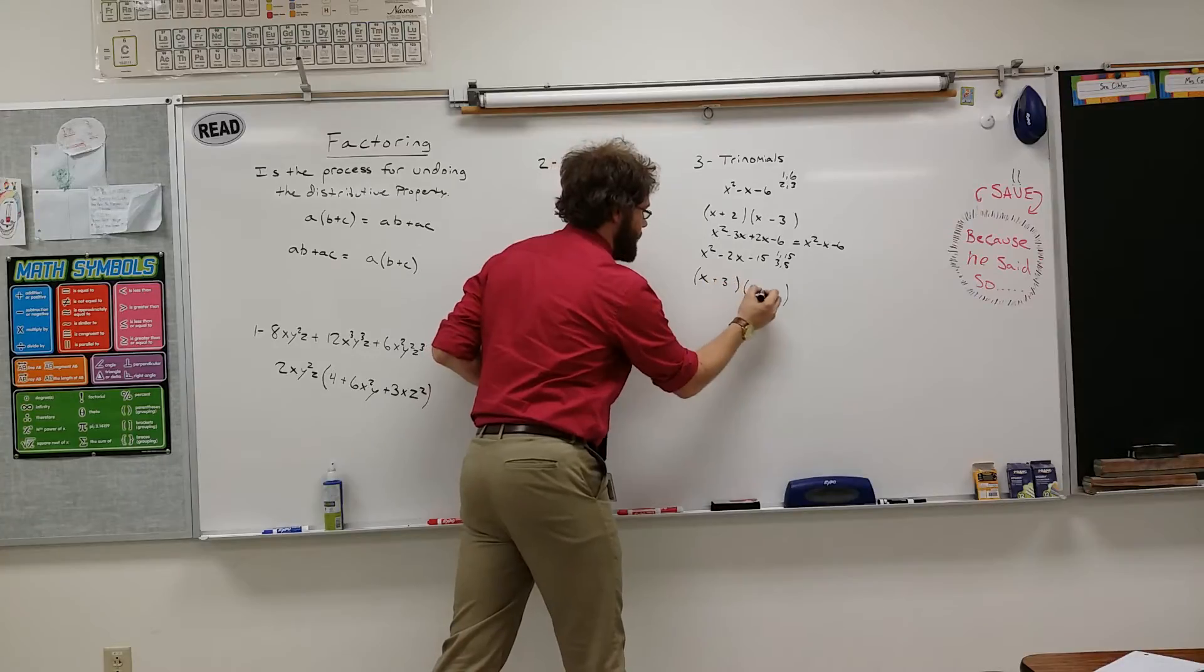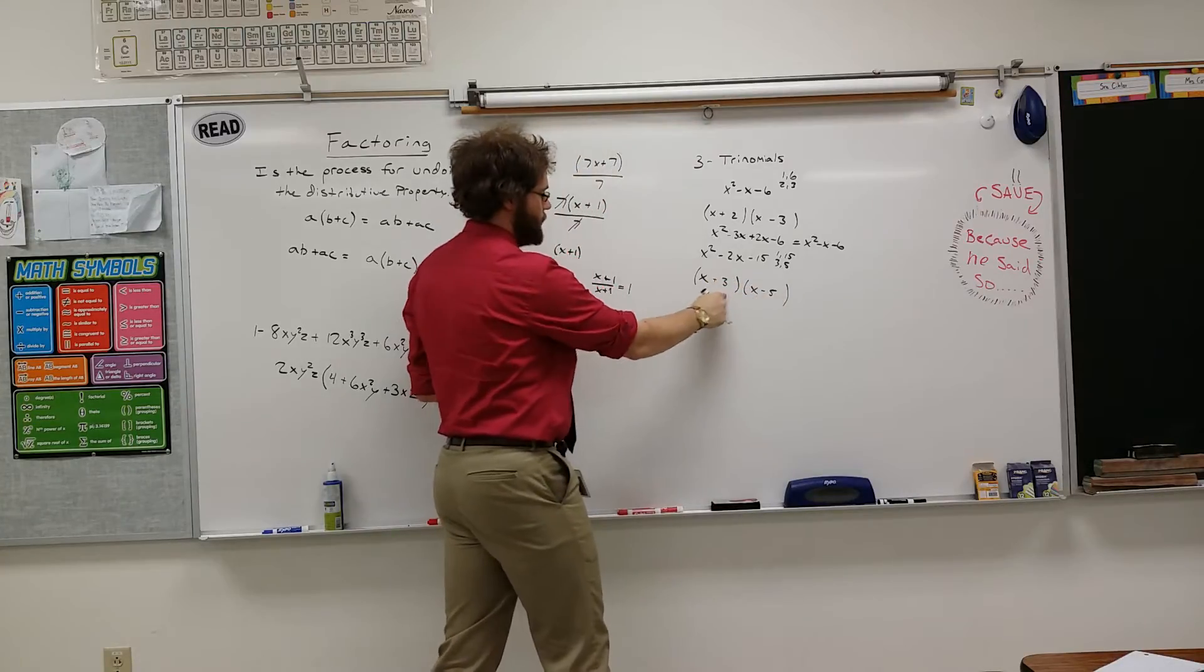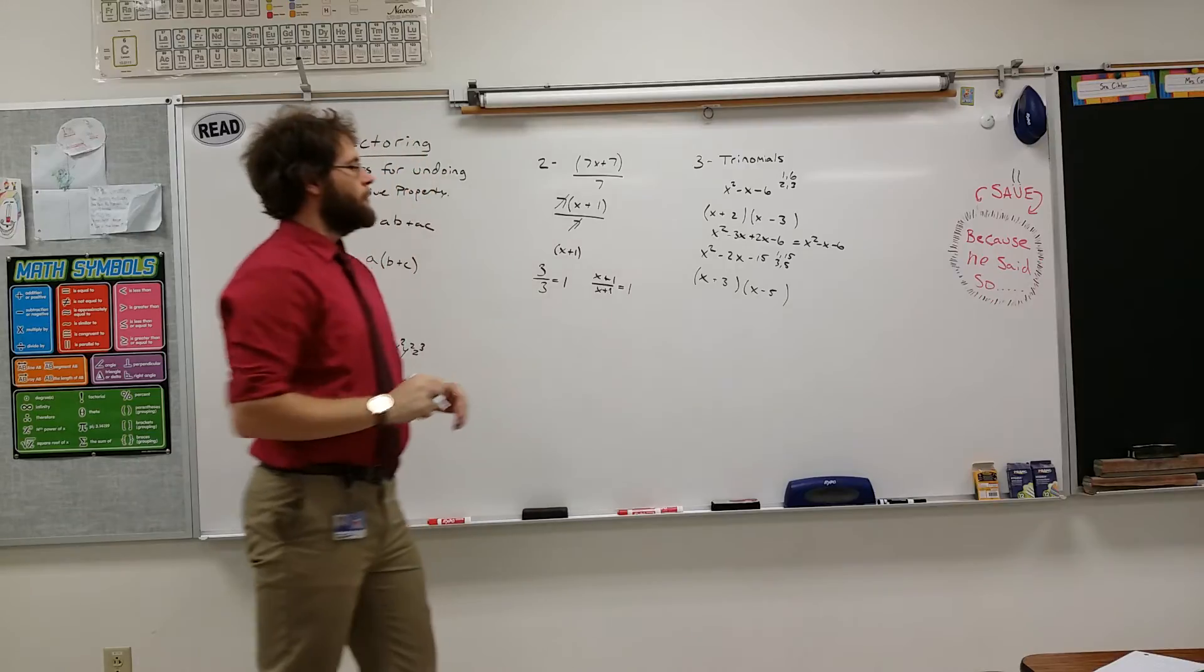I'll make it plus 3 and minus 5. That way, I'll get 3X minus 5X. You get negative 2X. All right.